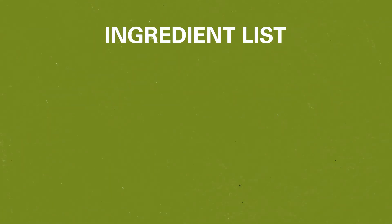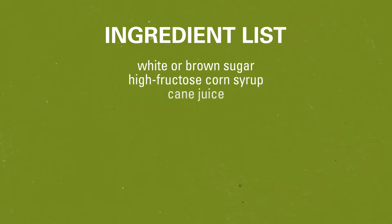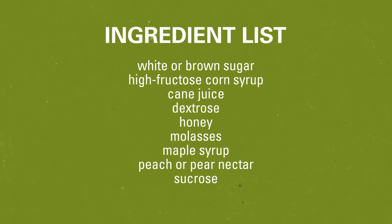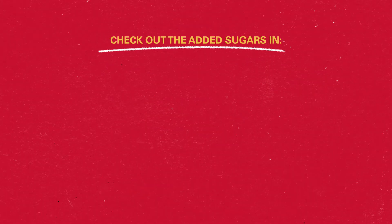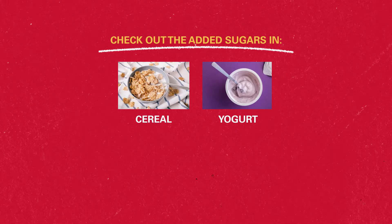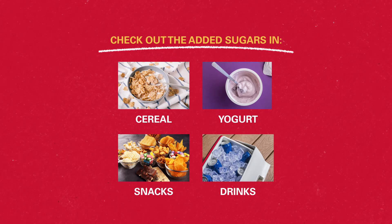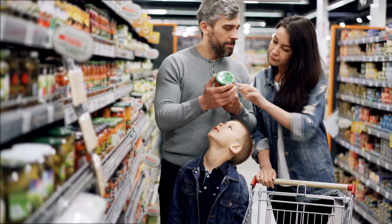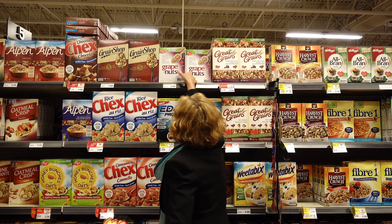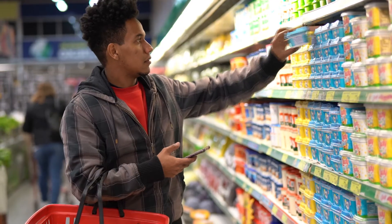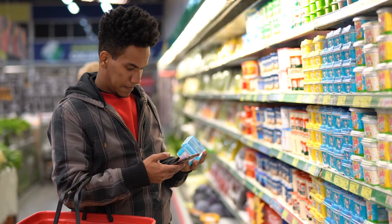The ingredient list can help you determine which ingredients are contributing to the added sugar in a product. Here are some types of added sugar. Check out the added sugar in the cereal, yogurt, snacks, and drinks you consume. Use the Nutrition Facts label to support your nutrition needs. Choose foods that contain more of the nutrients you want to get more of and less of the nutrients you want to limit.